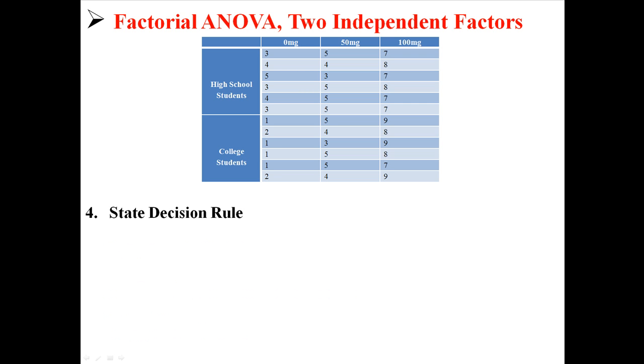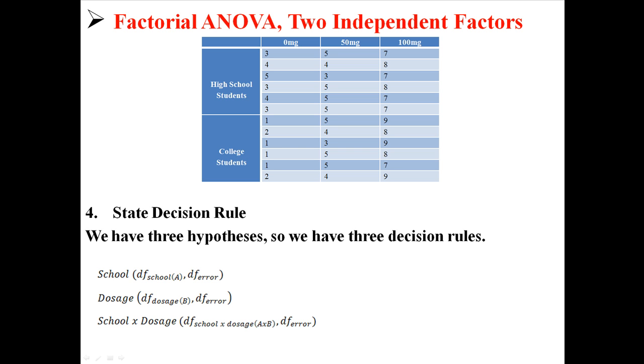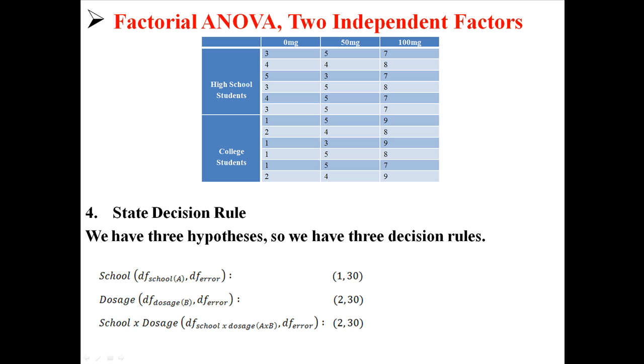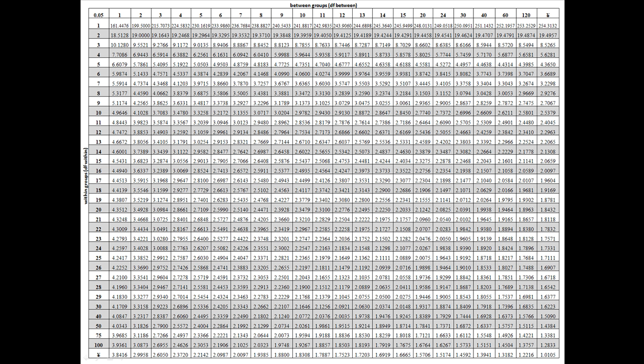Now next we're going to state the decision rule, and we're actually going to have three decision rules because we have three hypotheses. In order to look up these critical values as part of our decision rule, we're going to use degrees of freedom for the effect and degrees of freedom for the error. So for school we'll use 1 and 30, for dosage we'll use 2 and 30, and for the interaction we'll use 2 and 30. We're going to go to this big F table that we have.